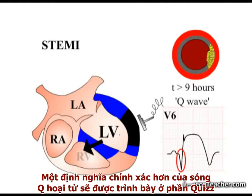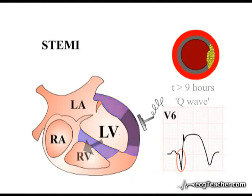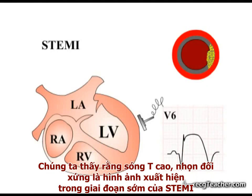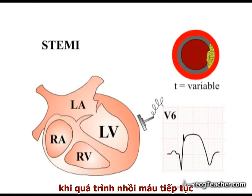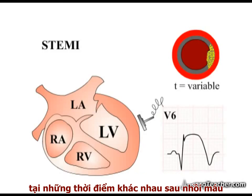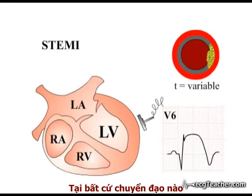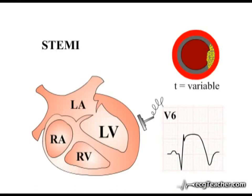A more precise definition of pathological Q waves will be given in the quiz section. We have seen that tall symmetrical peaked T waves are an early ECG finding in STEMI. As the process of infarction evolves, the T waves may demonstrate a further abnormality, developing at a variable time point after occlusion. In a given ECG lead, T waves are generally concordant with the QRS complex, so that in a lead with a dominant R wave, such as V6, the T waves are normally upright.